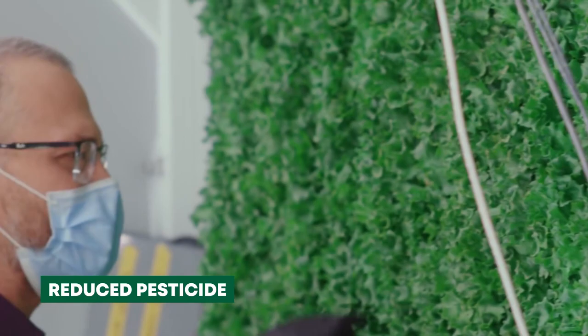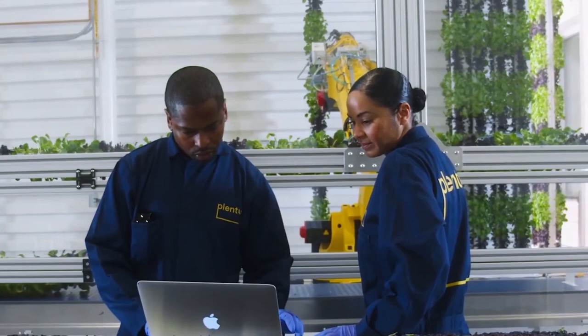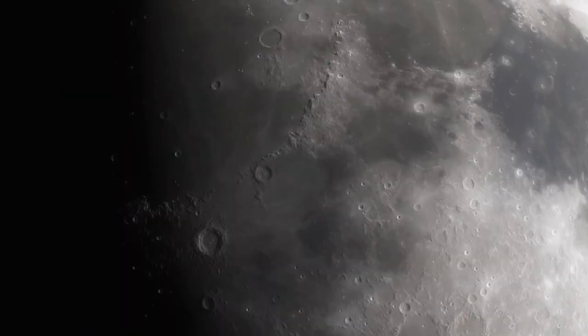Reduced pesticide use: The controlled environment in vertical farms can lead to a significant reduction in pesticide and herbicide usage. Local food security: Vertical farming can enhance food security by enabling cities to grow a portion of their food locally, reducing dependency on external sources.